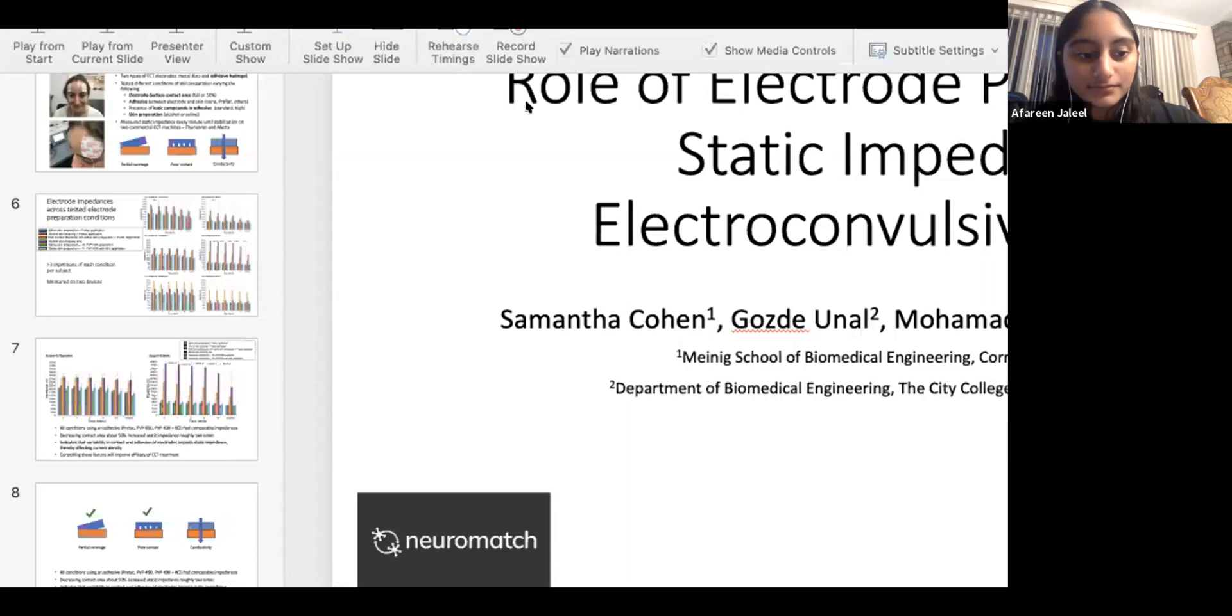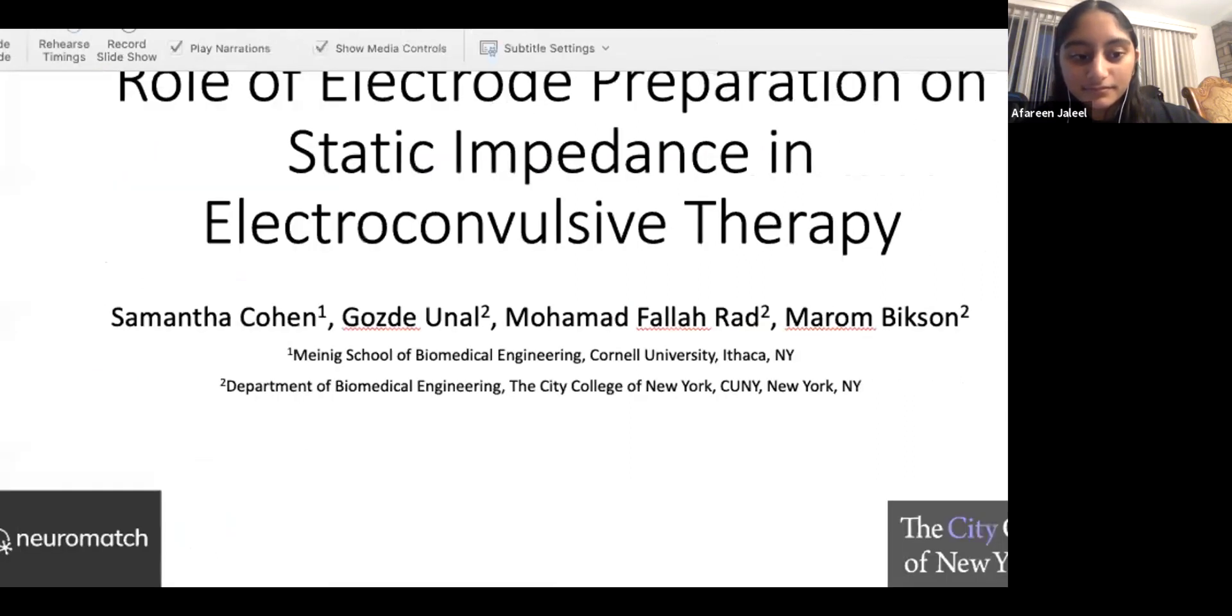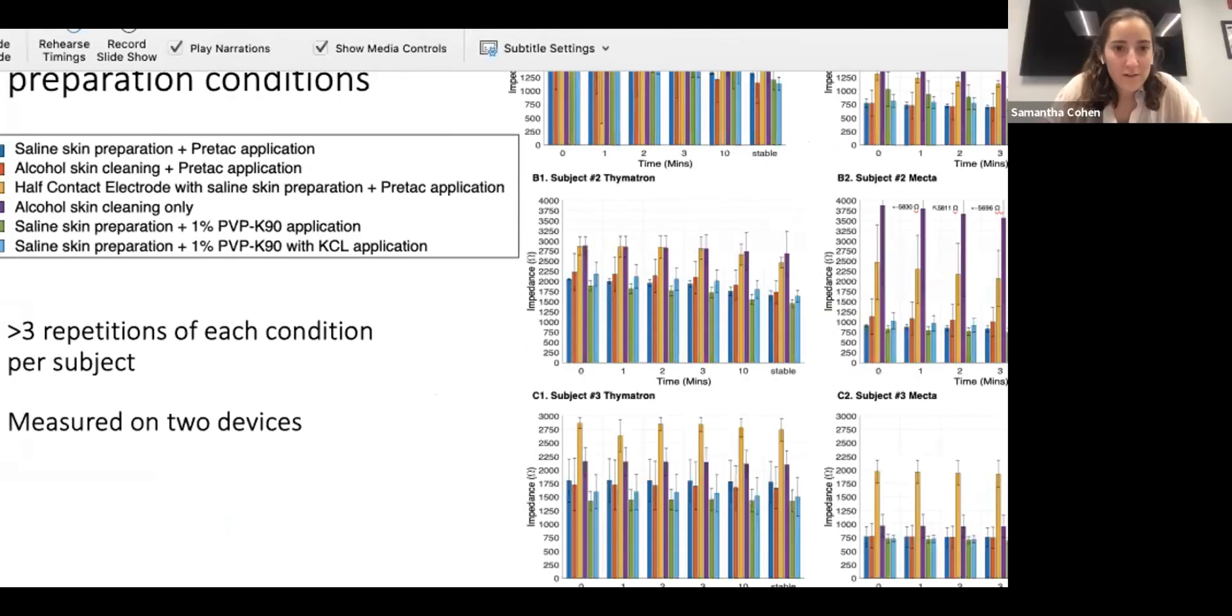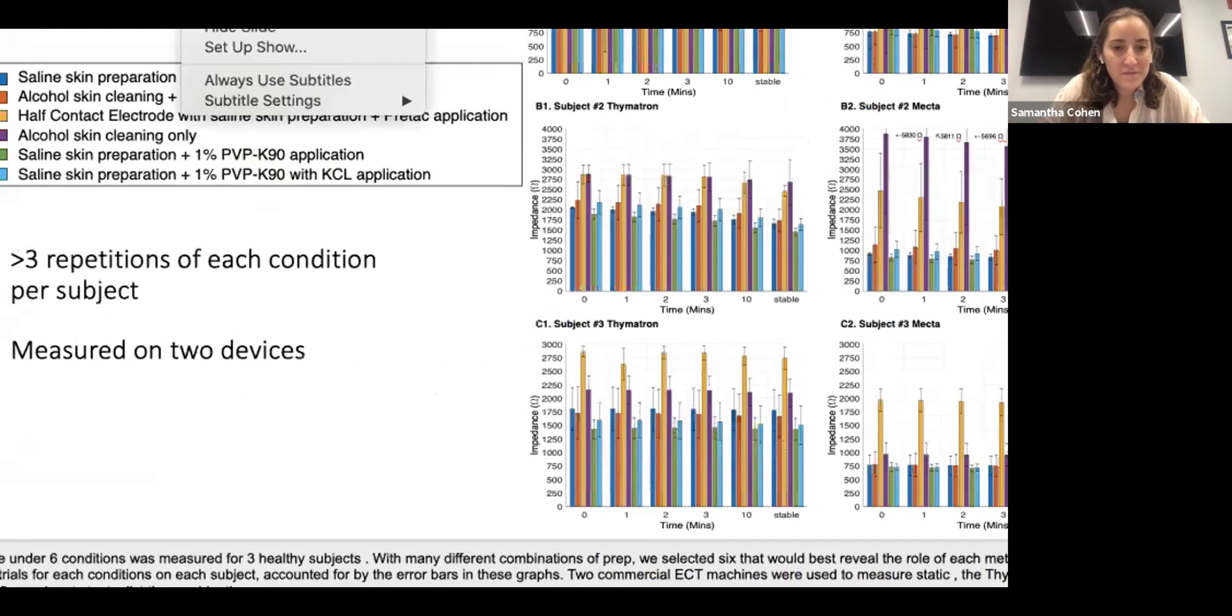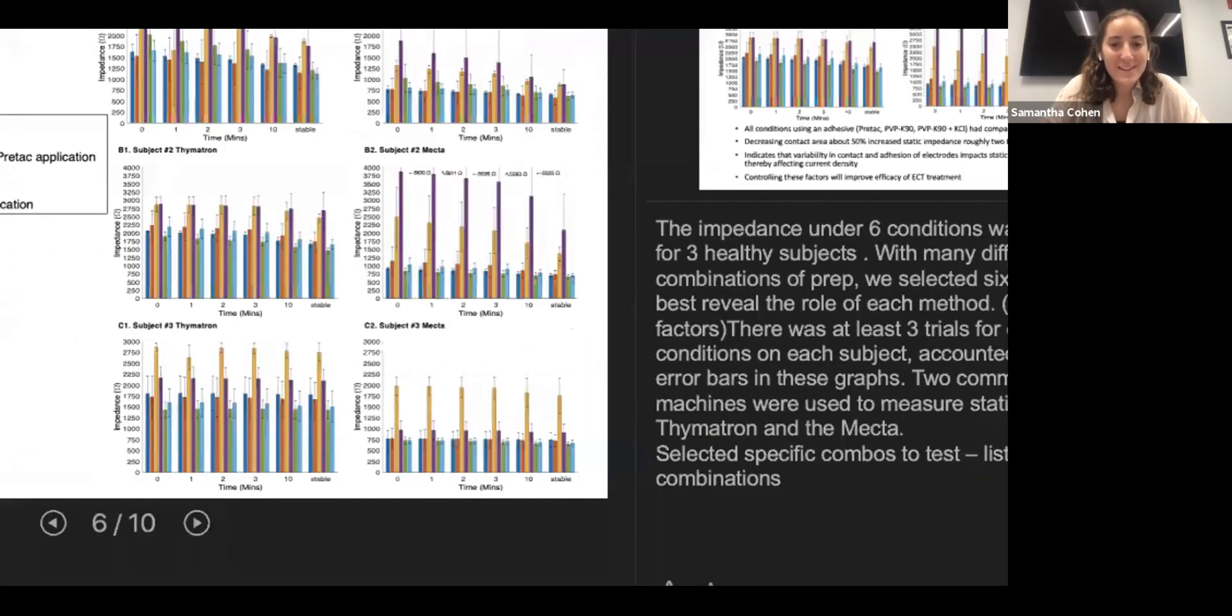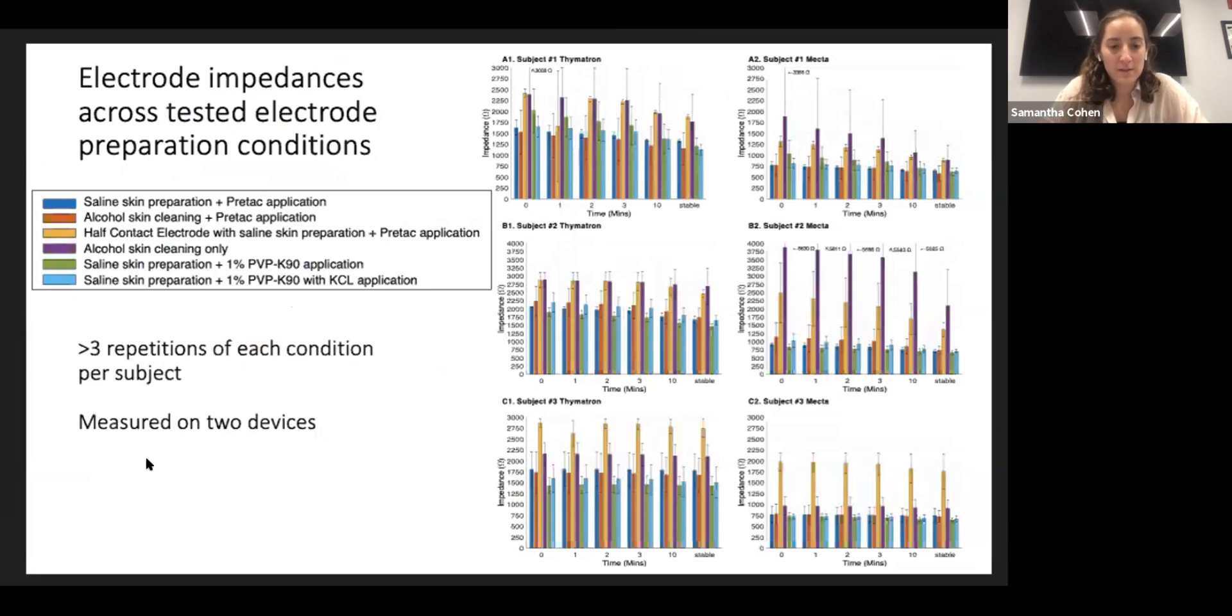So we recorded the static impedance for each condition for every minute, for a minimum of 17 minutes or until the static impedance stabilized because it would often jump back and forth a little bit. And so it decreases over time, as we can see. And then we took the averages of each condition for each subject, and that is what we have plotted over here. Yeah, cool.